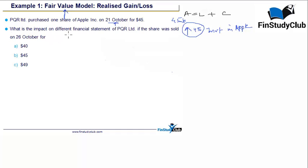OK, now on the date of 21st of October, your investment is appearing at a value of $45. What is the impact on different financial statements if the share was sold on 26th October five days later for $40, $45, or $49? So again, I'm going to take help of this magical equation A is equal to L plus C. Now the key question is, on the date of sale, my share was valued at $45.